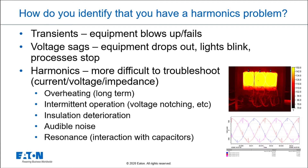Looking at the picture here, the transformer on the right is an infrascan showing very high current distortion and very high heating. So if I have long-term overheating, I likely could have harmonics issues. If I have intermittent operation — things that don't work correctly, PLCs locking up — I could have a harmonics issue.